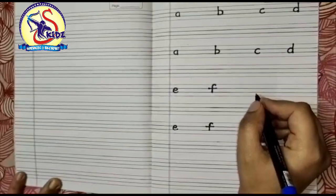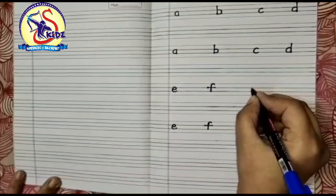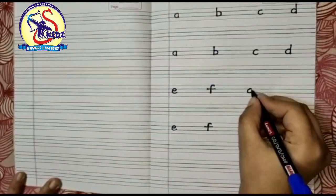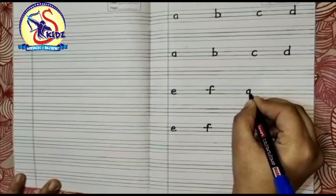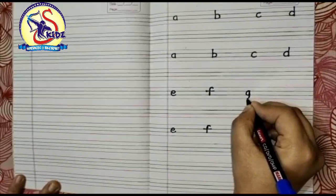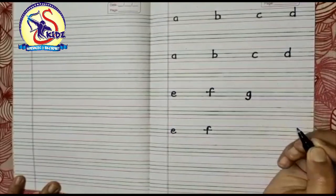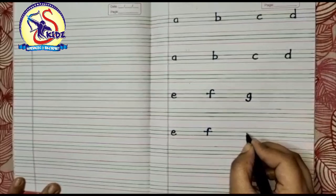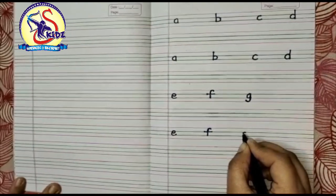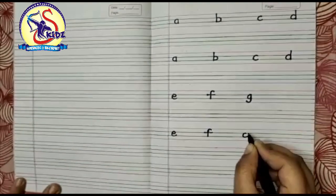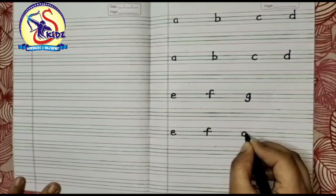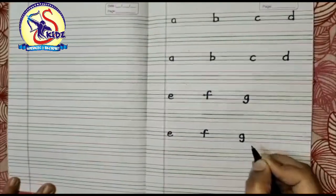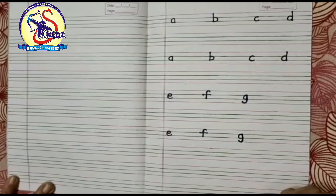Now small g. Start from the middle and make a small c. Then go to the middle again and make a standing line with a backward curl at the bottom. This is small g.